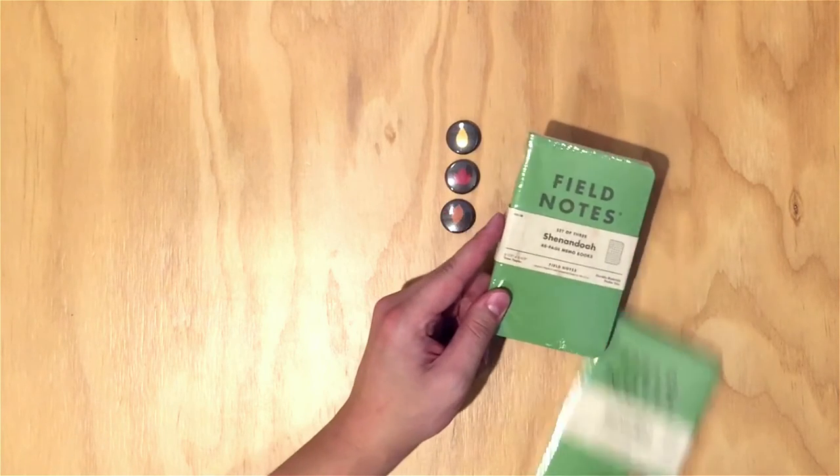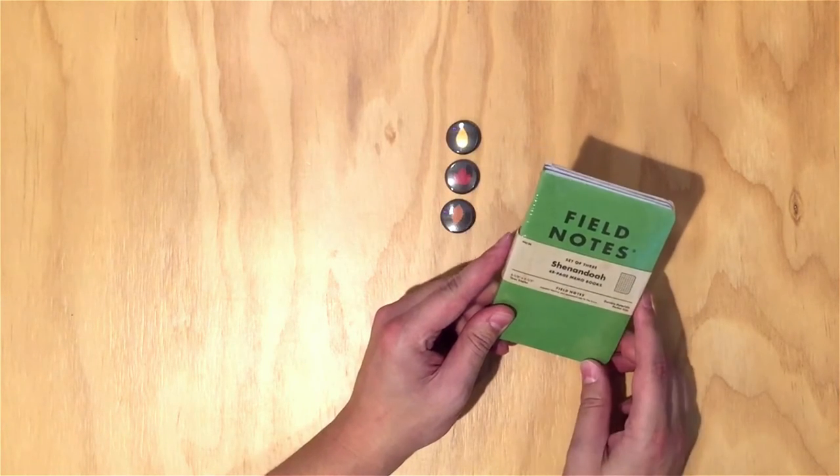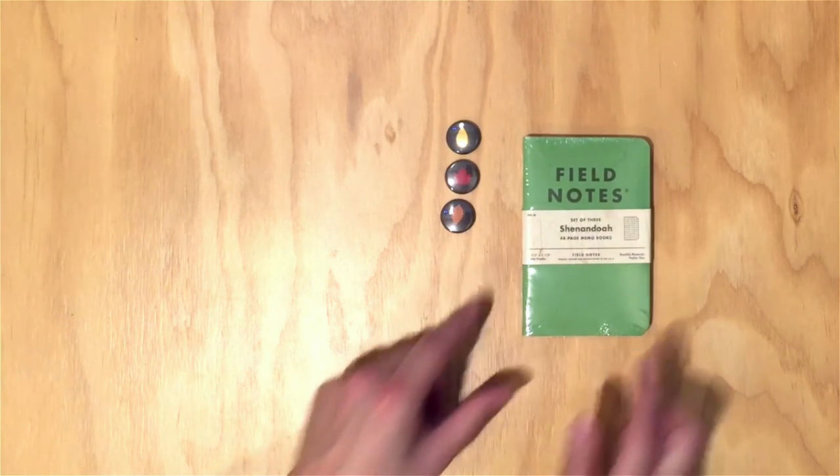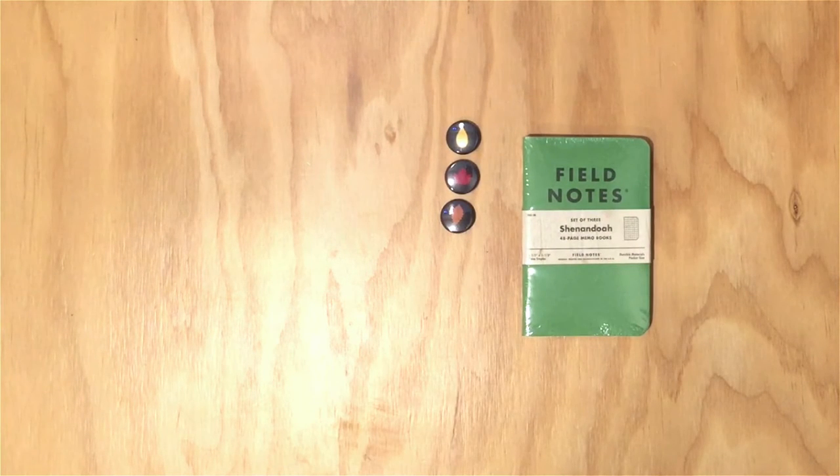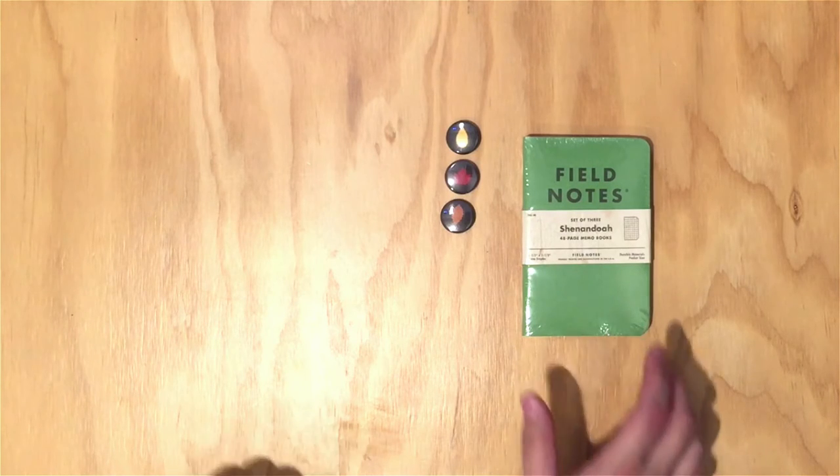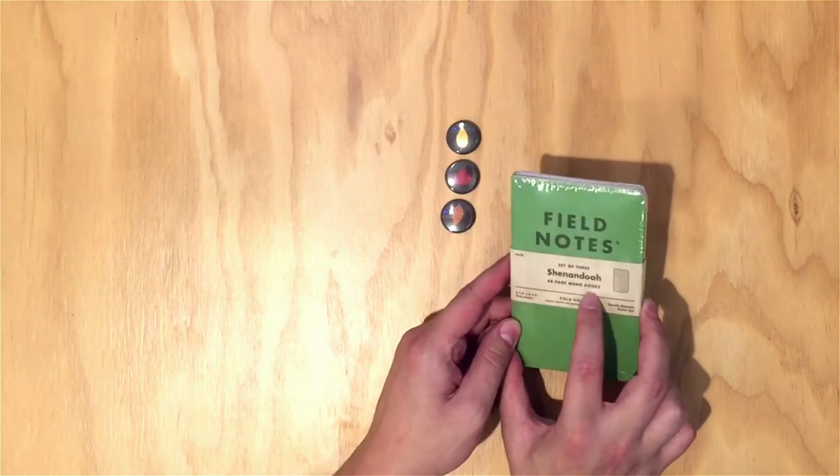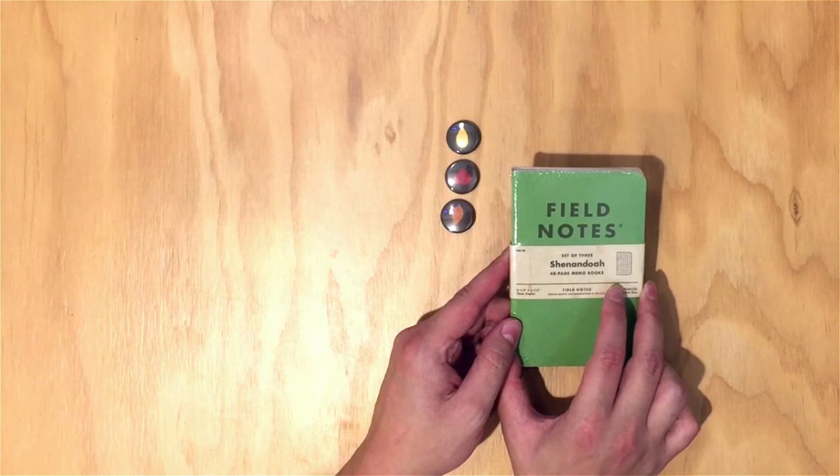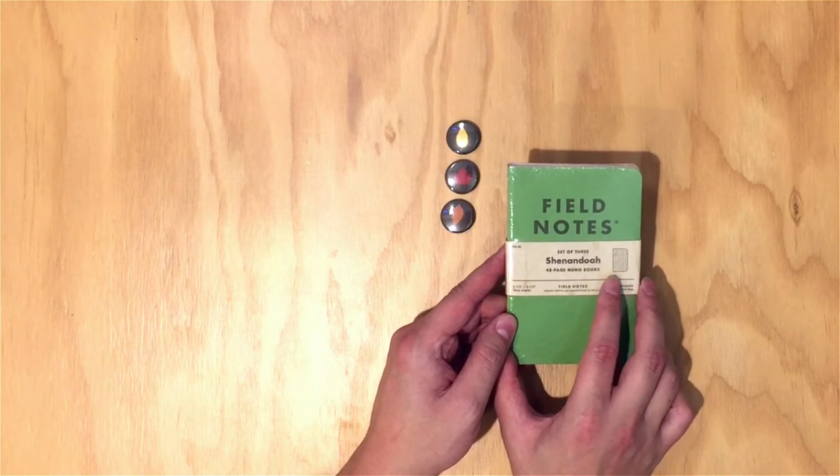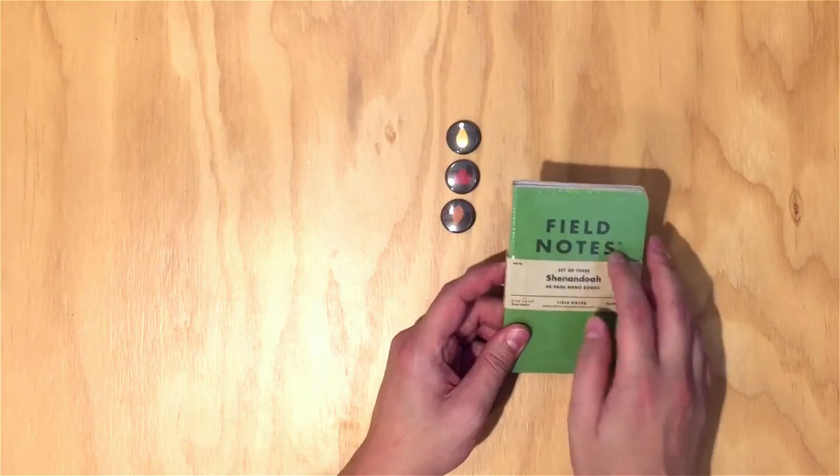This is the 28th edition of the Special Colors edition of Field Notes. Shenandoah, for Fall 2015. I don't know if you can see right here, but they use shelter wood, shaved wood as the belly band, which I think looks amazing with it.